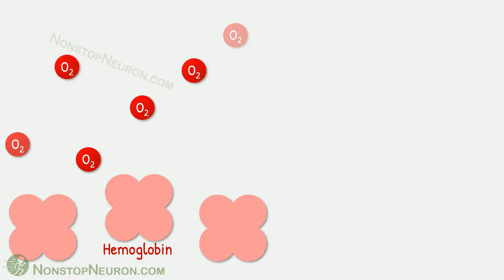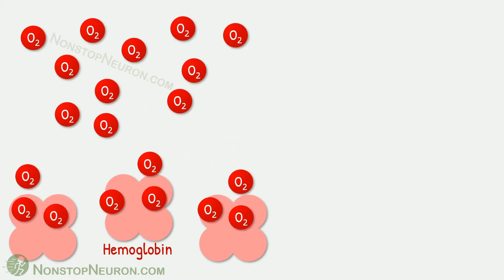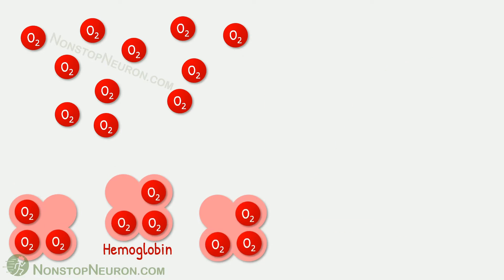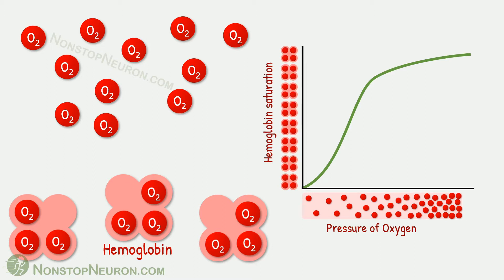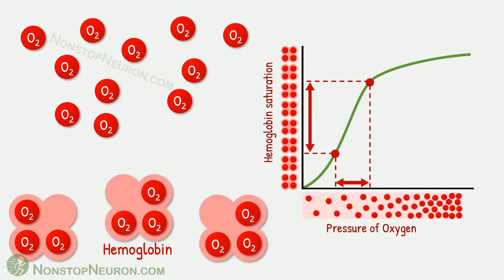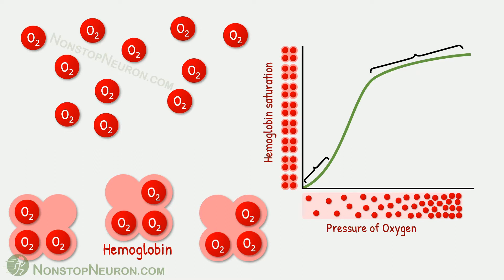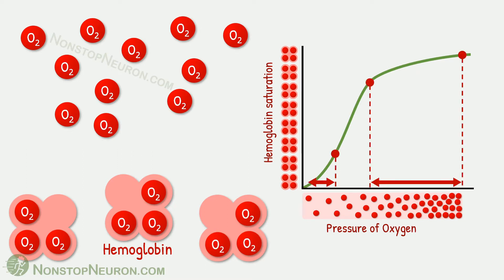First let's revise the oxygen hemoglobin dissociation curve. In the previous video we have seen that increasing partial pressure of oxygen increases hemoglobin saturation with oxygen. The graph of partial pressure versus oxygen saturation looks like this. The x-axis shows partial pressure of oxygen and on the y-axis we have saturation of hemoglobin. The curve is sigmoidal or S-shaped. It is steep in the middle part, where a small change in partial pressure of oxygen can cause a relatively large change in hemoglobin saturation. And it is flat at the beginning and at the end, where changes in partial pressure cause smaller changes in saturation.